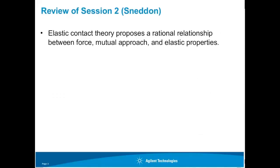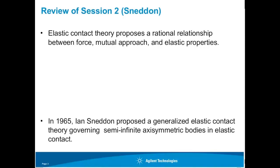This is our last session on elastic contact mechanics, and before finishing today, I plan to bring together everything from the last two sessions. So let's briefly review. In session two, we took a close look at Sneddon's solution to the Boussinesq problem. We saw that in general, elastic contact theory proposes a rational relationship between force, mutual approach — which we also call displacement — and elastic properties.